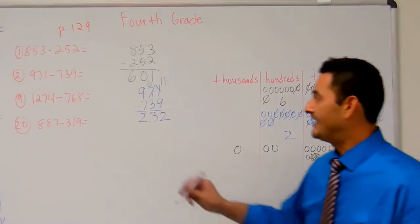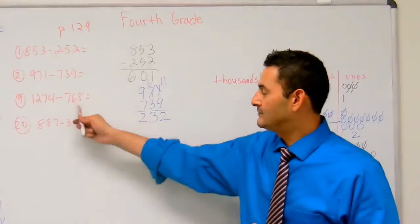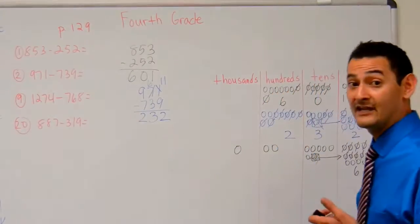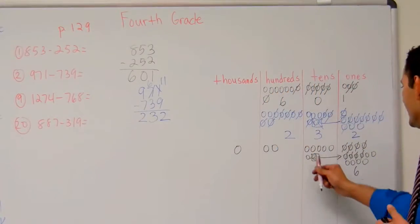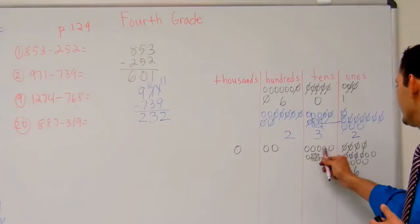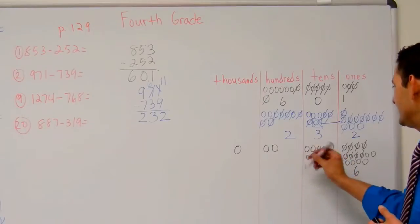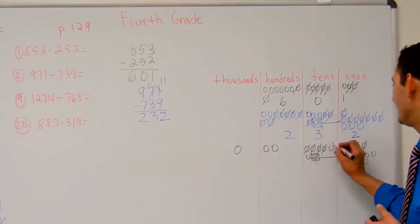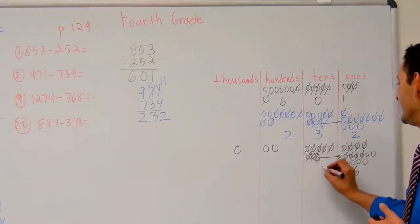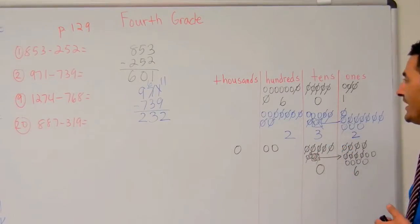Now let's take a look at the tens place. It says to take away six — one, two, three, four, five, six. I can do that. Got zero there.